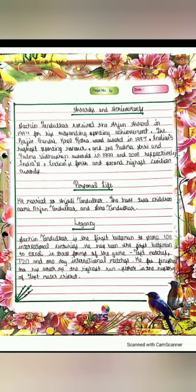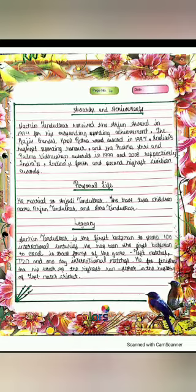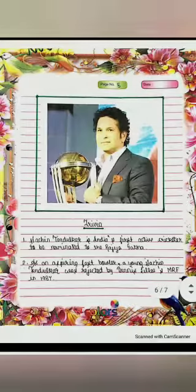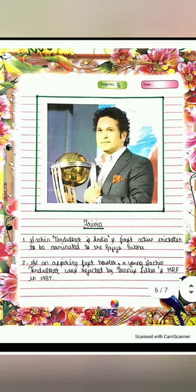Legacy. Sachin Tendulkar is the first batsman to score 100 international centuries. He has been the first batsman to excel in all three forms of the game — Test matches, T20s, and One Day Internationals. He finished his career as the highest run scorer in the history of Test match cricket.